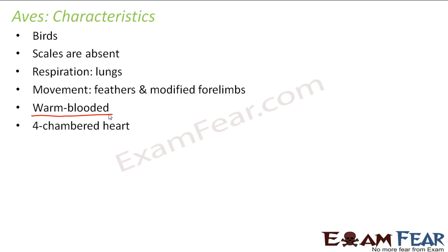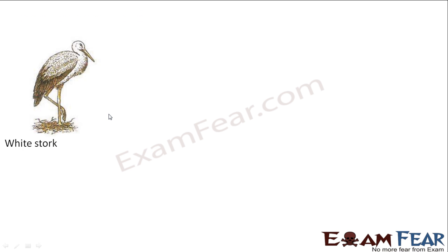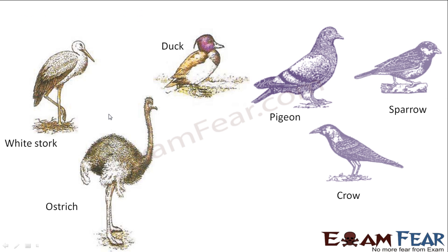Birds have a four-chambered heart, and reproduction is again through laying eggs. Examples of birds are quite varied — something like pigeon, crow, and sparrow are birds we see in day-to-day life. Near water regions you would have seen white storks or ducks, and there are also birds like ostrich which are not commonly seen everywhere. There are many varieties of birds present.